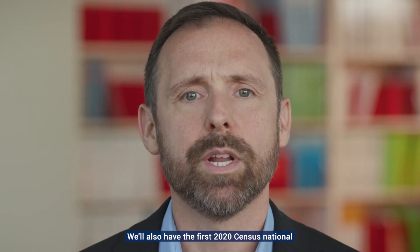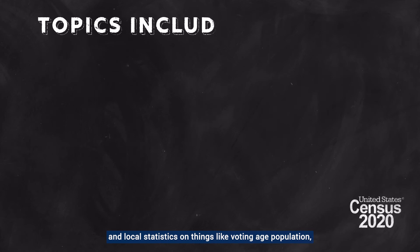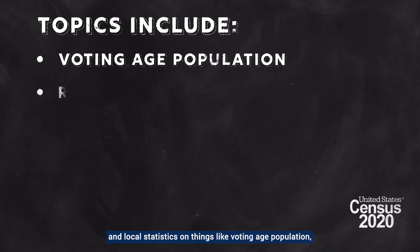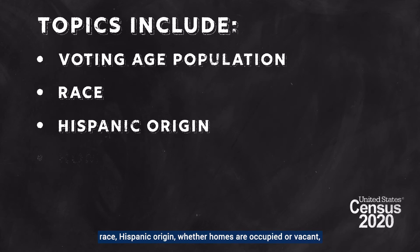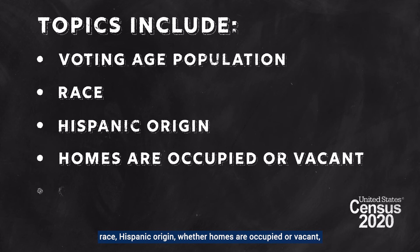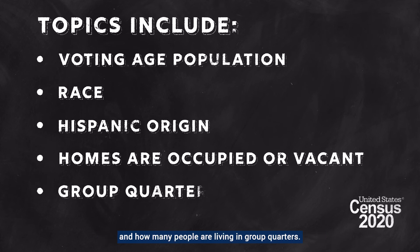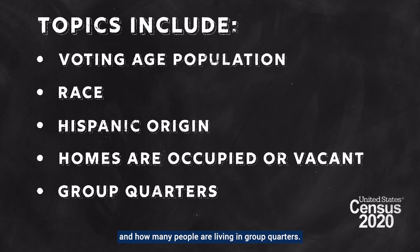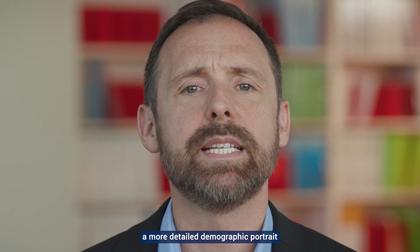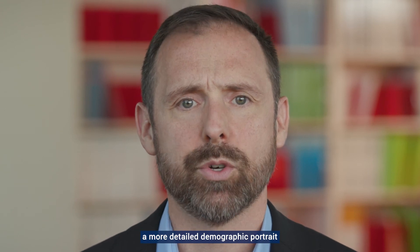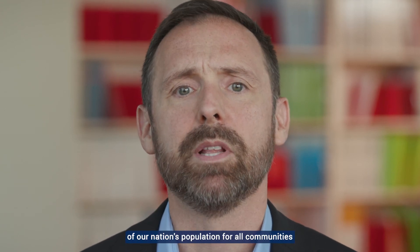We'll also have the first 2020 census national and local statistics on things like voting age population, race, Hispanic origin, whether homes are occupied or vacant, and how many people are living in group quarters. This information will provide a more detailed demographic portrait of our nation's population for all communities all across the United States.